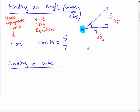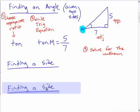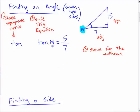The third step, so this was one, this was two, once you write a trig equation your step's going to be solve for the unknown. If you have tangent of M equals five sevenths, this is the ratio, and we need to find the angle, right?